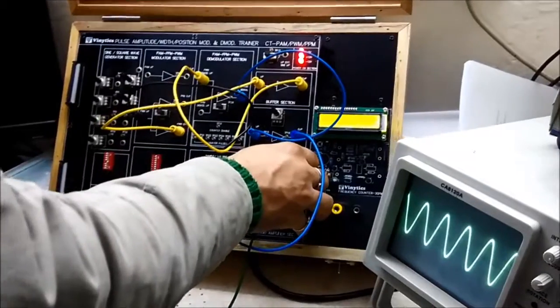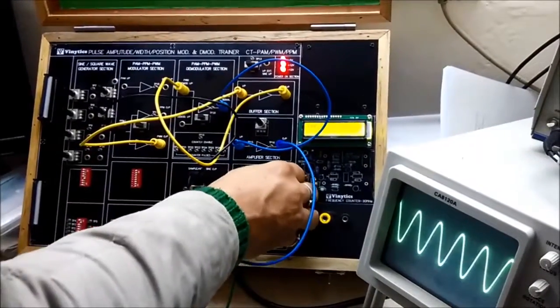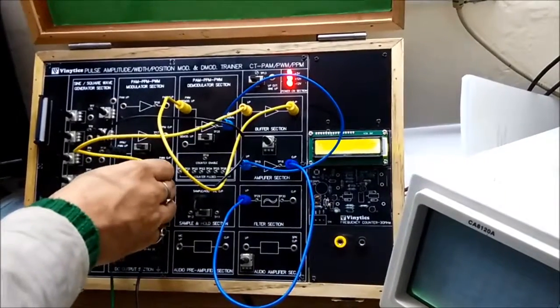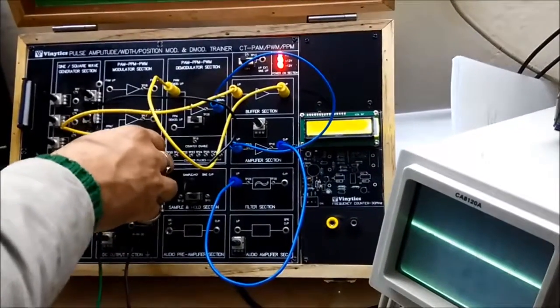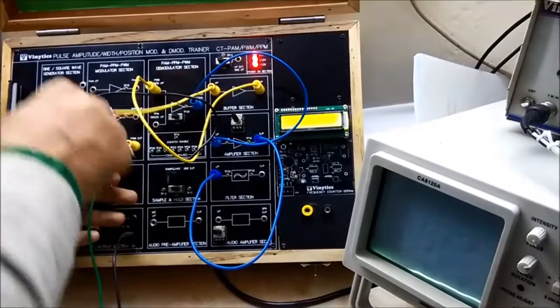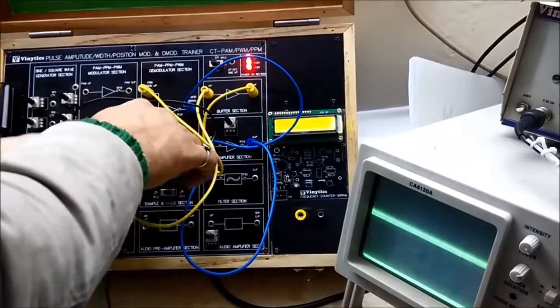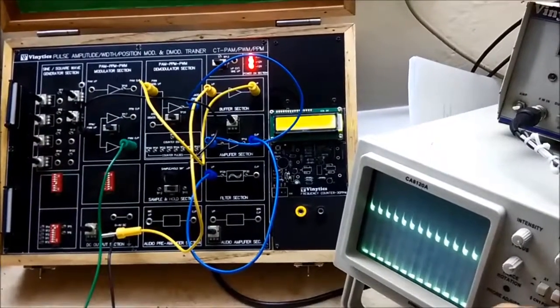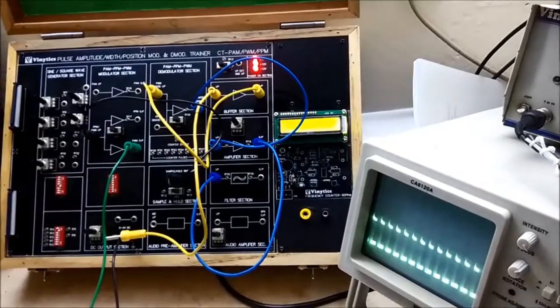Now likewise, if you want to see the signal at intermediate section, you can just simply go to various test points such as TP14 will give you the modulated signal. This is our PWM modulated signal.